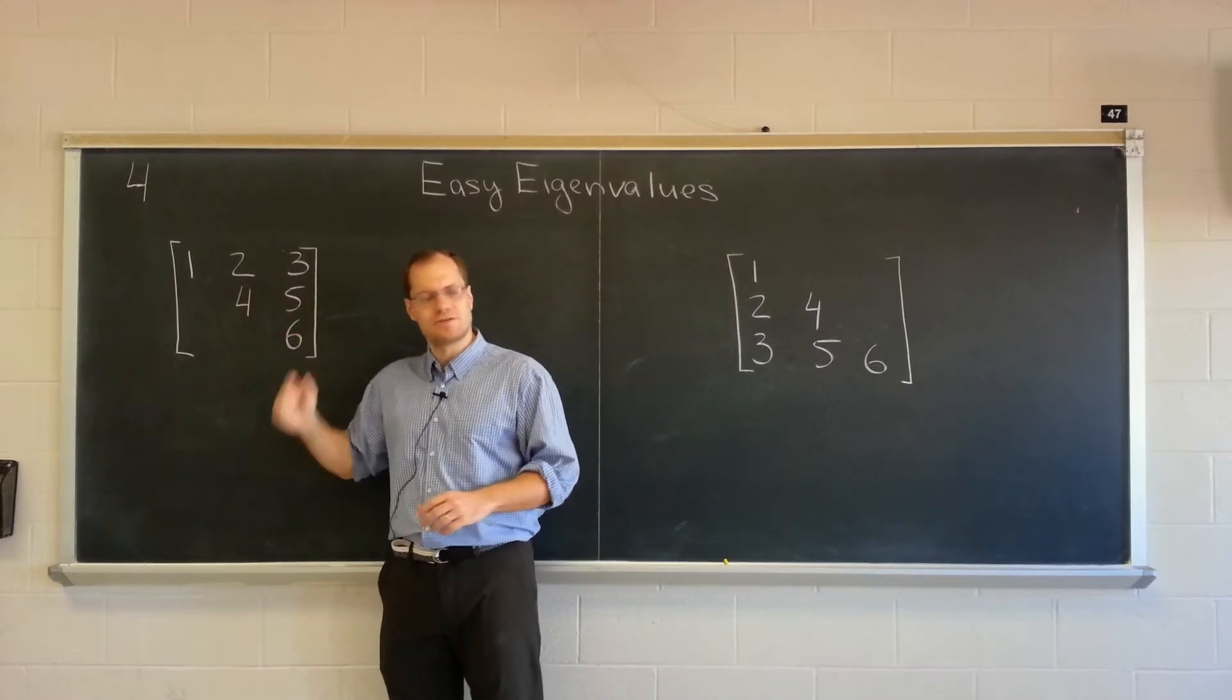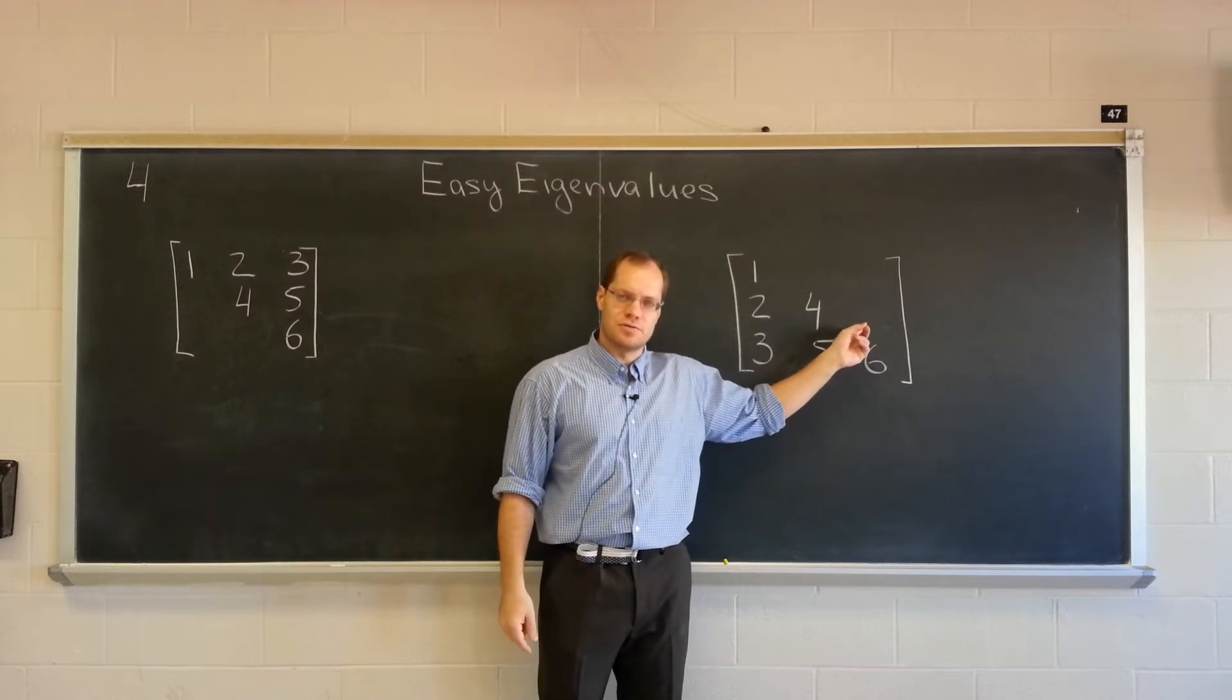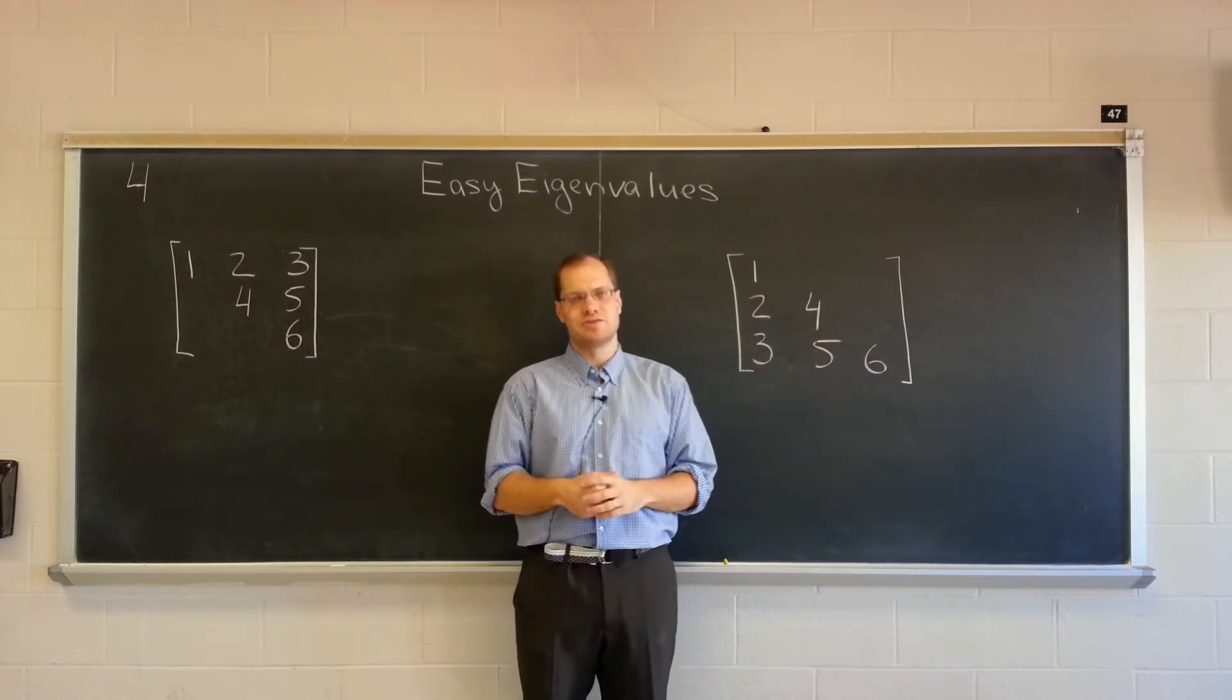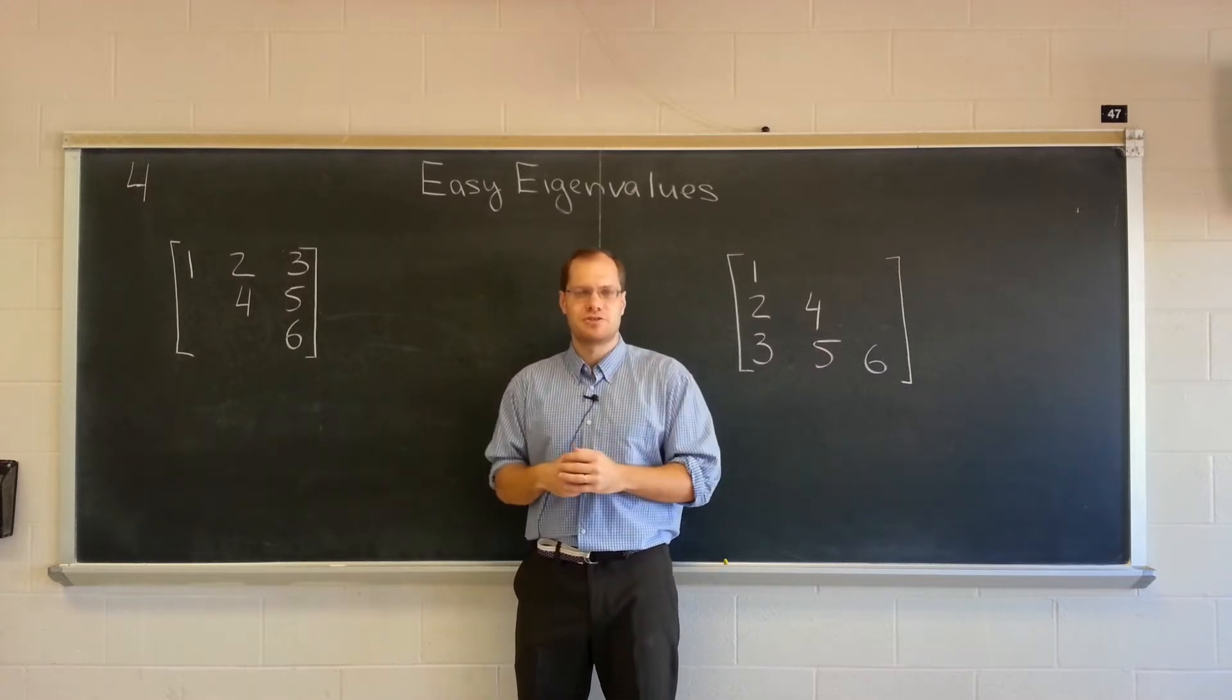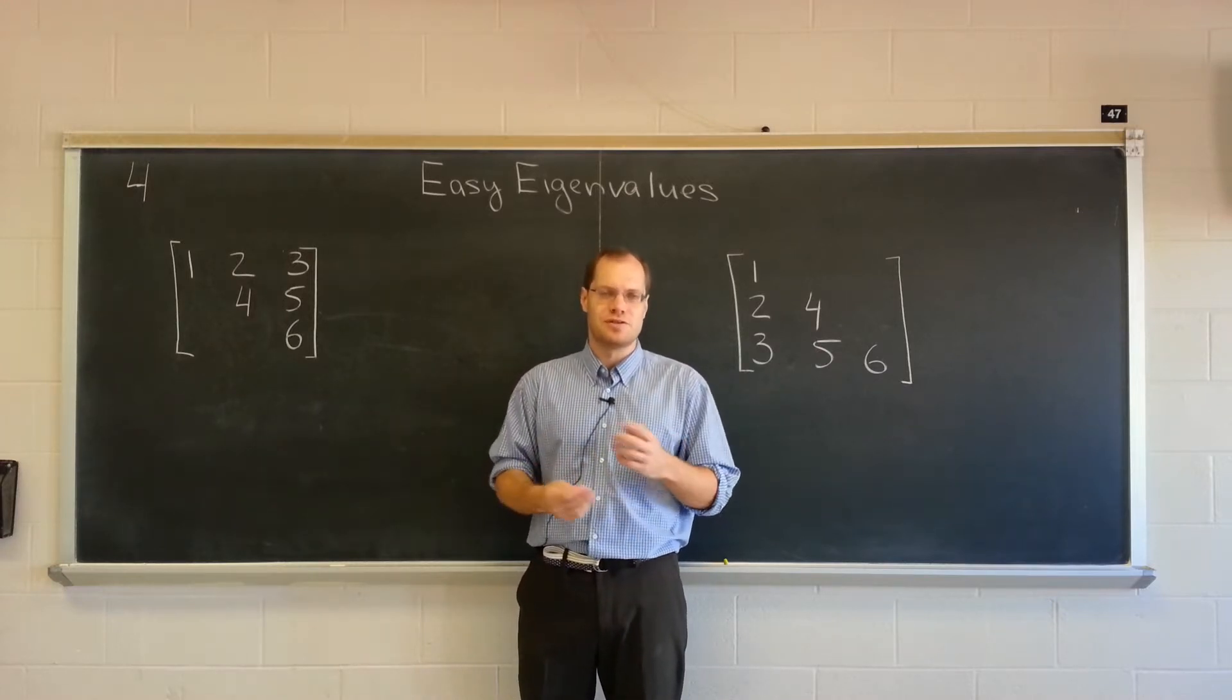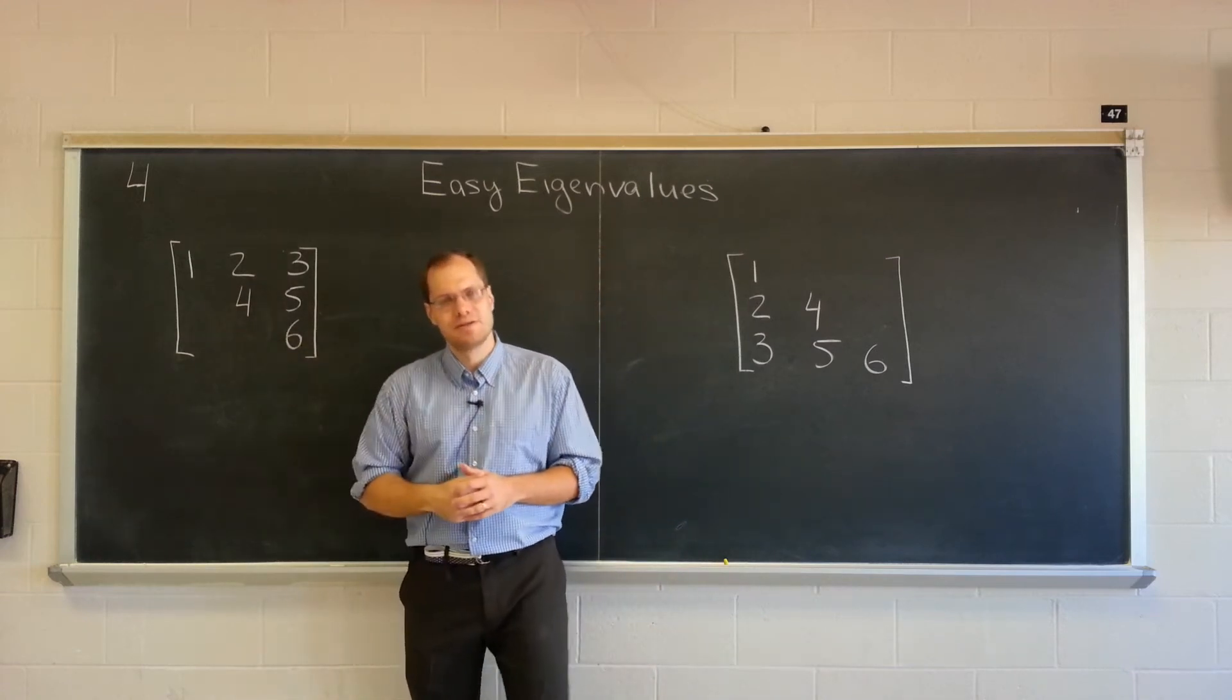So for upper triangular matrices and lower triangular matrices, the empty spots are zeros. That's one of the conventions of linear algebra. To bring forward the special features of the matrix when there are a lot of zeros, you just skip them altogether. So you can mentally fill in the gaps with zeros.